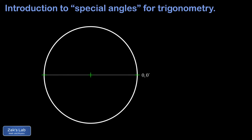We're going to start finding special angles by dividing the circle in half. Measuring the angle counterclockwise from the positive x-axis, that must be an angle of 180 degrees or pi radians — we just took the two pi radians for the whole circle and divided by two. Next we divide the halves in half. The point at the top of the circle is half of 180 degrees, which is 90 degrees, or half of pi radians, which is pi over 2 radians.